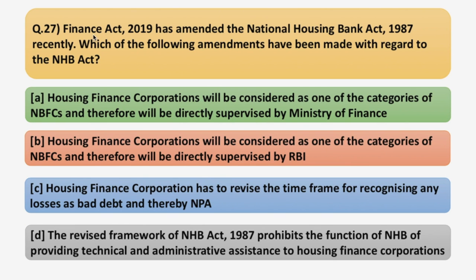This question relates to the Finance Act 2019 amendment and it is a really important question because it has great implications. The question says: Finance Act 2019 has amended the National Housing Bank Act 1987. Which of the following amendments have been made with regard to the NHB Act? Four options have been given. To answer this question, you must know what amendments were made to the NHB Act in Finance Act 2019, because no guesswork will work here. I have taken a screenshot of the RBI notification regarding this amendment.